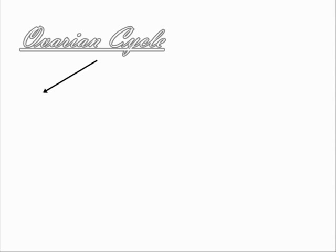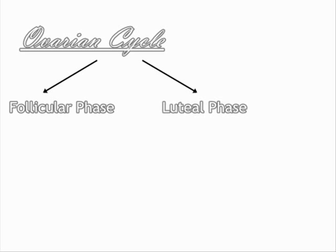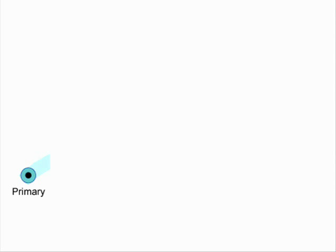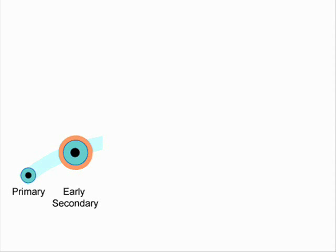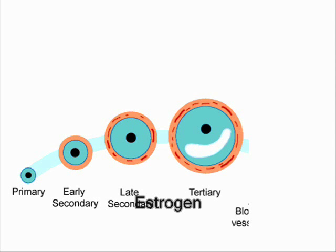The ovarian cycle is subdivided into two phases: the follicular phase and the luteal phase. The follicular phase starts with the development of about 20 follicles in the ovary under the stimulation of the hormone FSH released from the pituitary gland. These follicles grow steadily, releasing the hormone estrogen into the bloodstream.